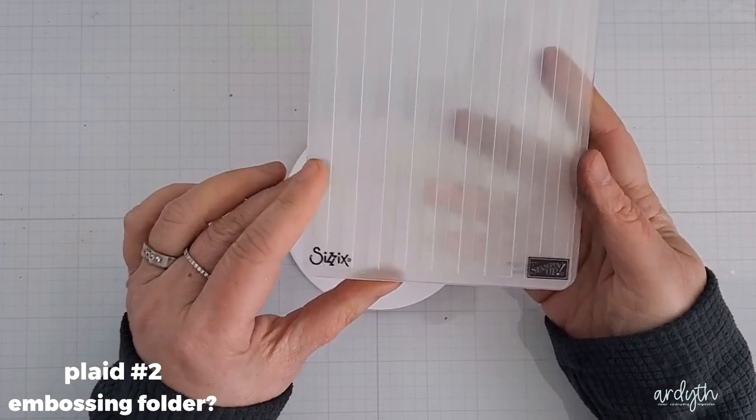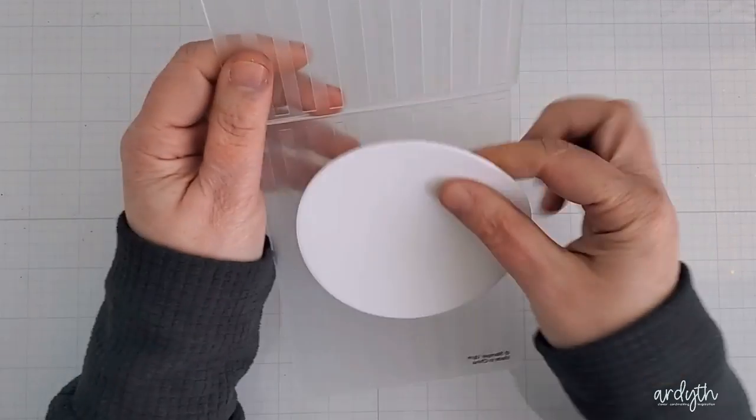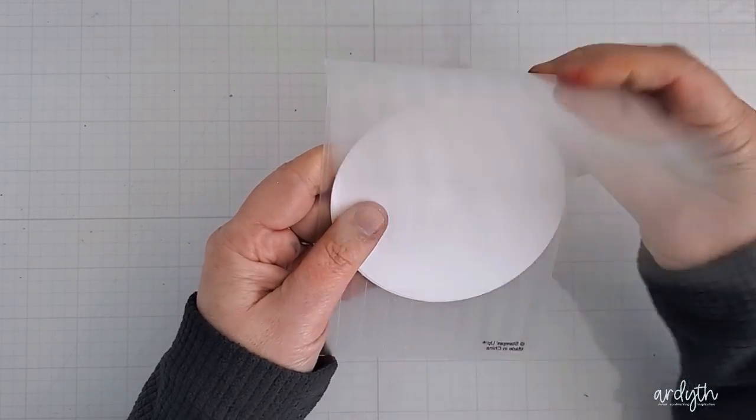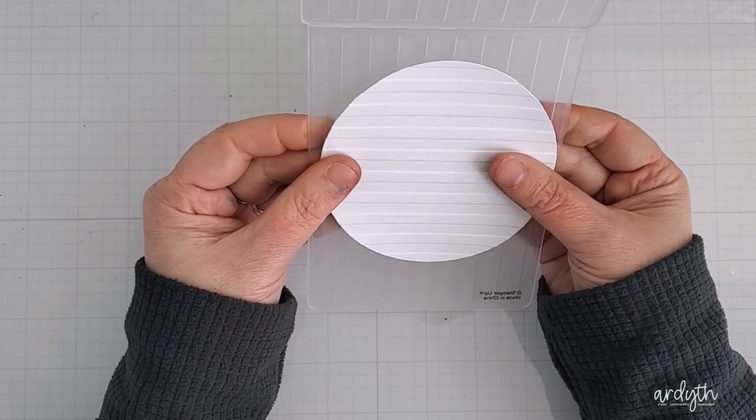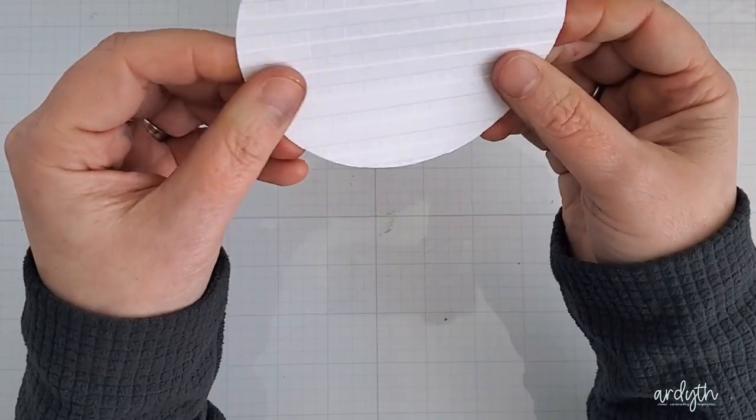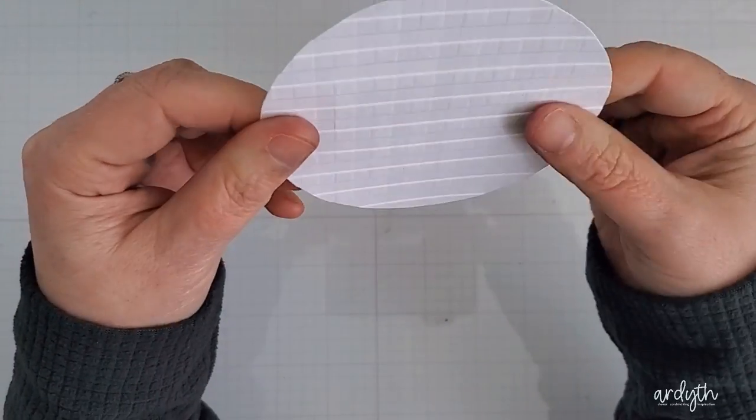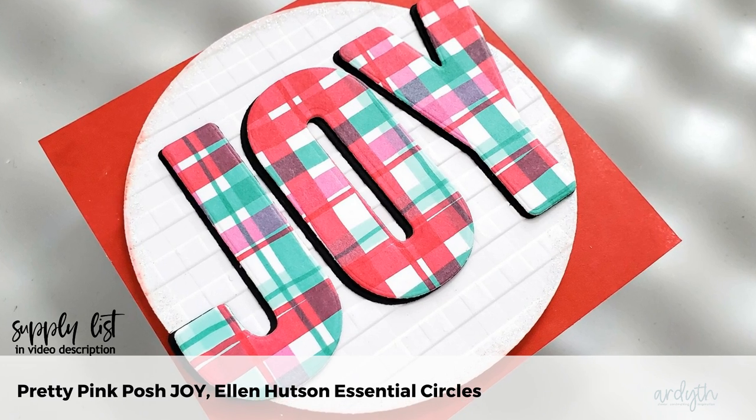Plaid number two is more of an experiment. I don't have a plaid embossing folder, but I do have this old striped one and I wondered if I could create plaid with it on this white circle die cut. I got a good striped impression and now comes the test. I turned the circle 90 degrees and I ran it through again, and as I kind of predicted, the second impression sort of flattened out the first one. It is there, I'm not sure if you can see it, and it does add some additional subtle texture, but it's definitely not what I would call successful plaid.